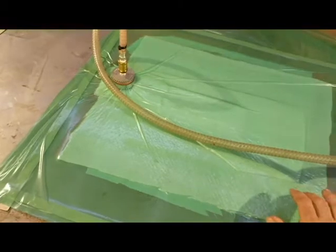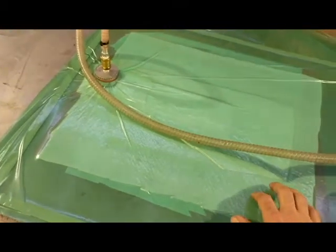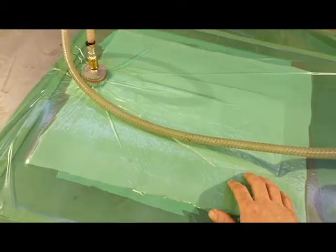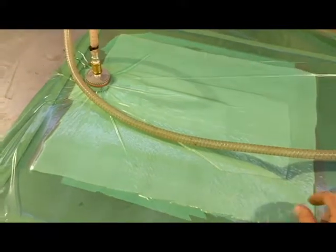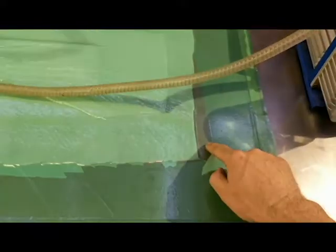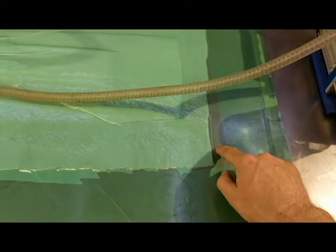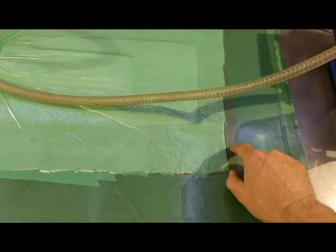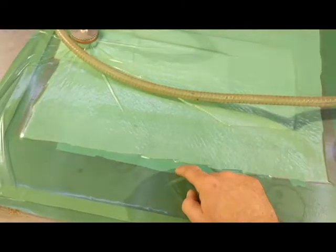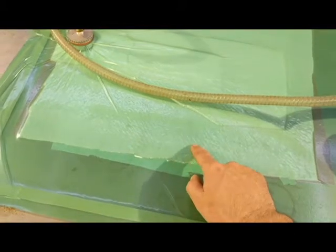So on top of the carbon fiber, which I epoxied fairly liberally, we've got this pink layer, which is a perforated peel ply. Then a release film. Then breather.